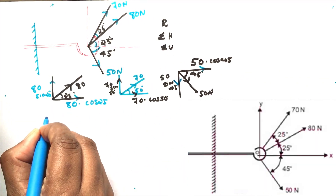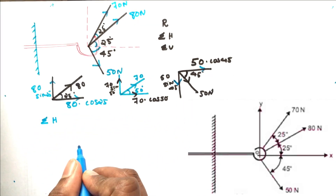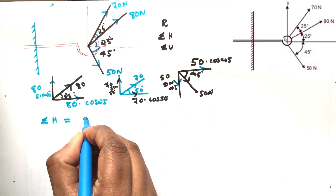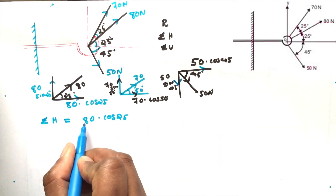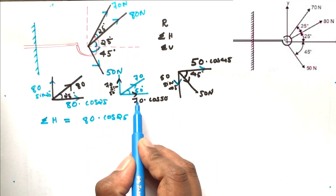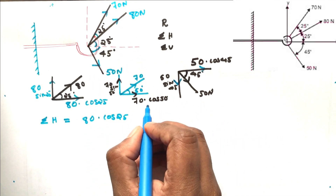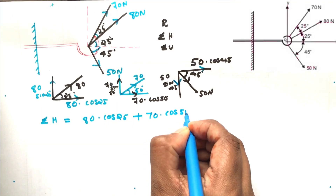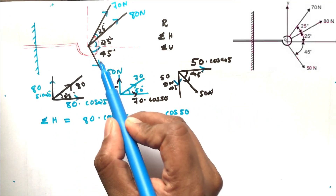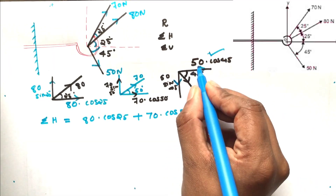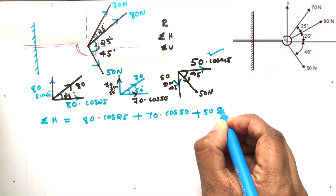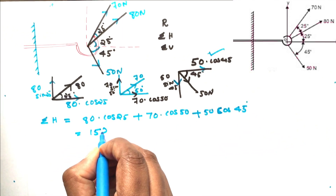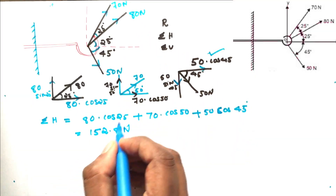Now, Sigma H — the sum of horizontal forces. First, the 80 Newton horizontal component: 80 cos 25, sign is plus, meaning rightward. Then 70 Newton: 70 cos 50, sign is plus, also rightward. Then 50 Newton: plus 50 cos 45. The answer is 152.8 Newtons.